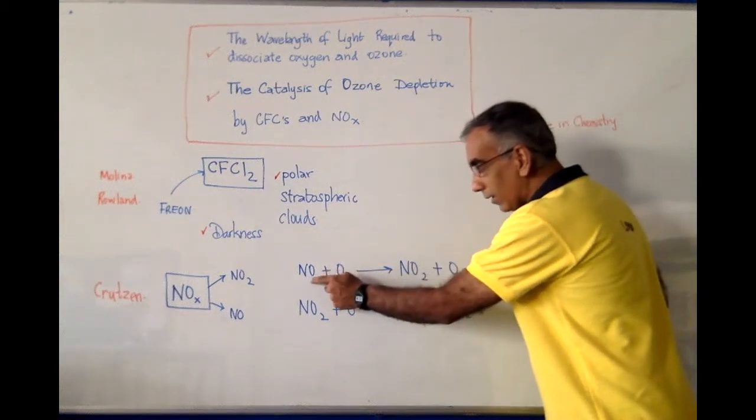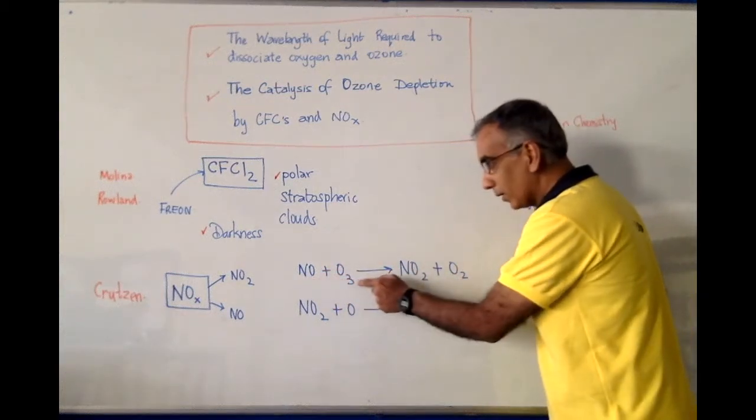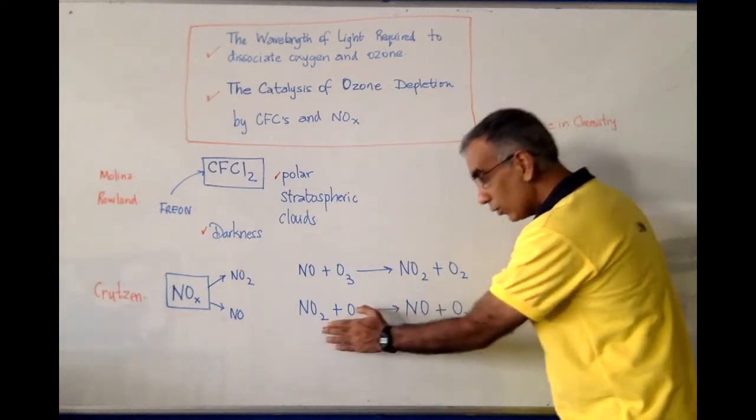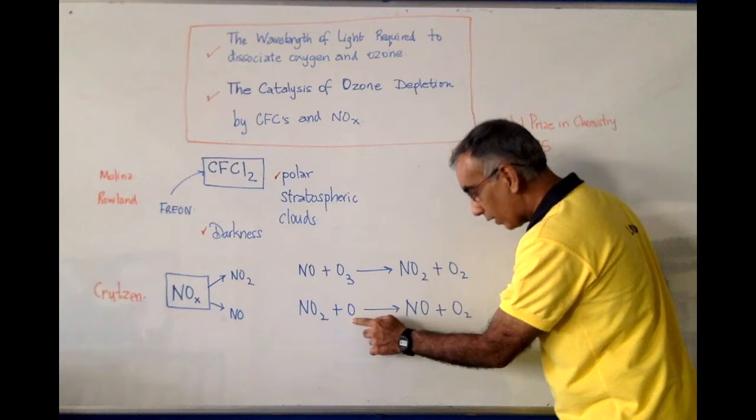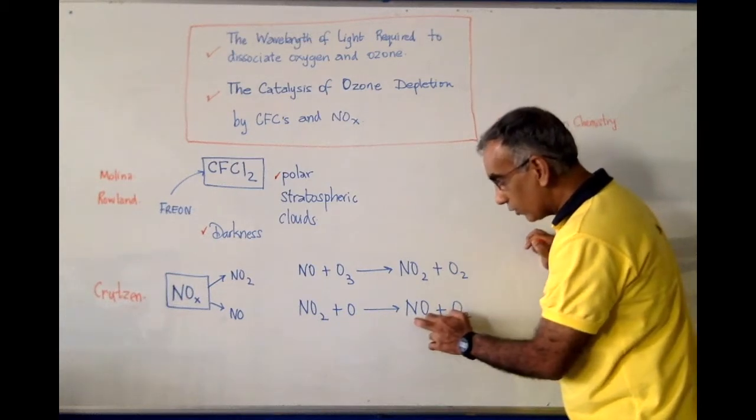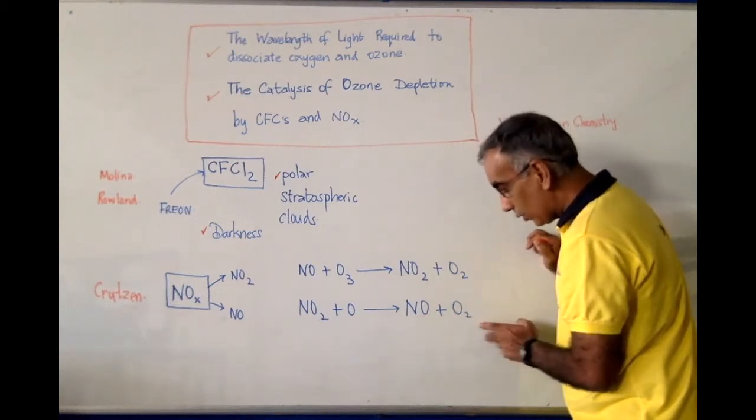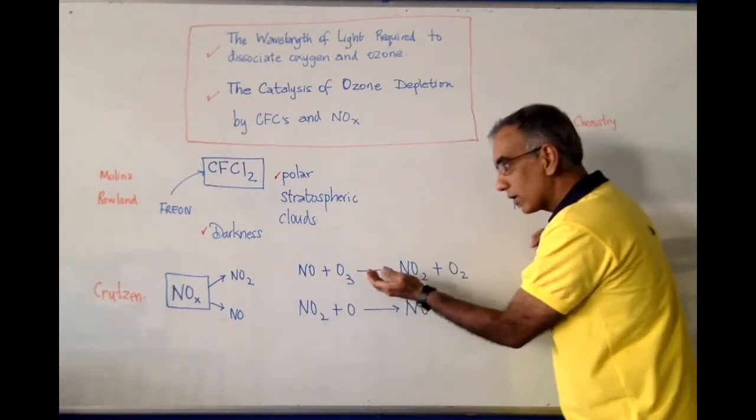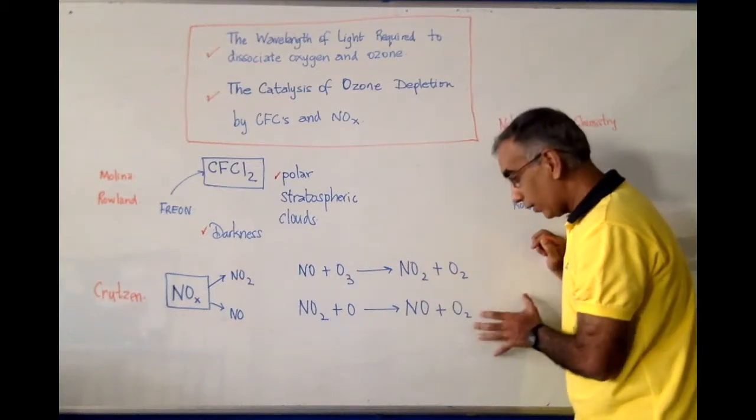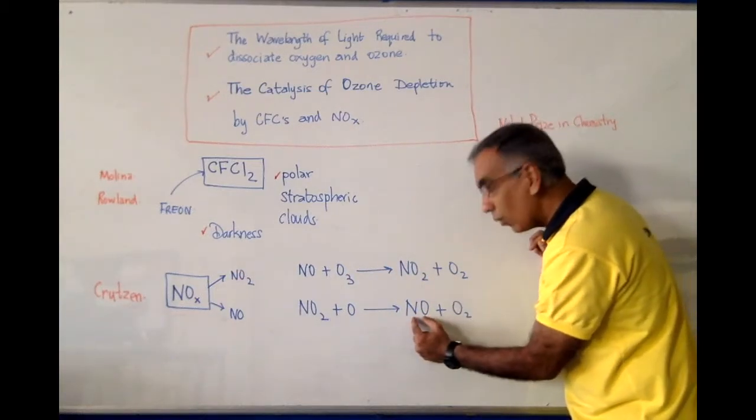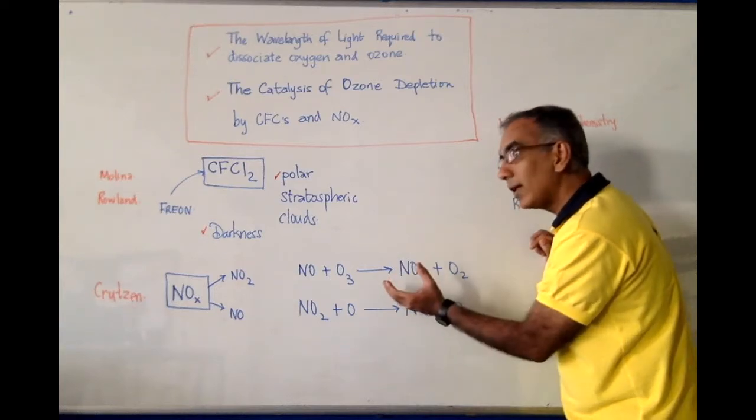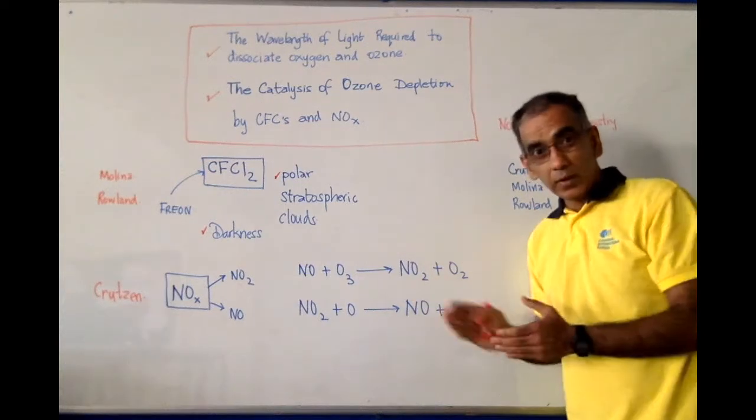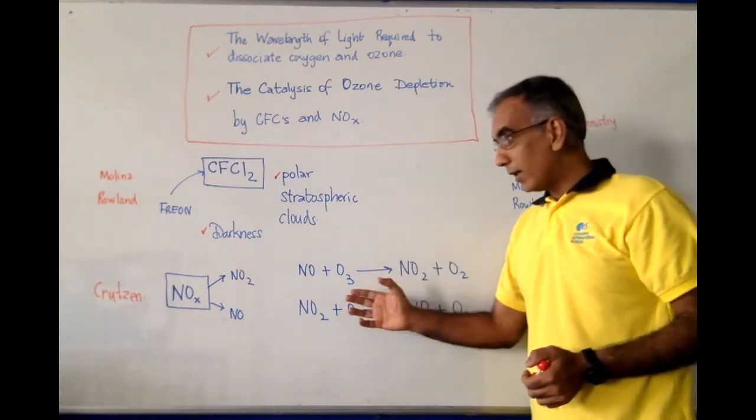What we know today as NOx. Crutzen demonstrated that nitrogen oxide, for example, would react with ozone to produce NO2 and O2. And then NO2 would react with a single atom of oxygen to produce nitrogen oxide again and O2. Allowing this nitrogen oxide to be regenerated and to continue its depletion or degradation of ozone. In this way, NO was acting as a catalyst in breaking down ozone. And this was the first threat to the ozone layer to be identified in 1970.